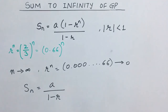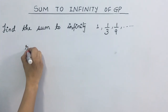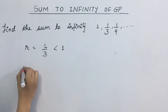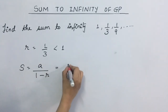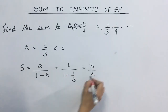So this is going to be the formula for sum to infinity of GP. One thing should be noted here: yeh jo sum to infinity wala case hai, this is valid only when the value of r is less than 1. Yadi yeh 1 se choti hai, tabhi yeh case apply hoga. Let us understand this: find the sum to infinity of the series 1, 1/3, 1/9, and so on. In this case, what is r here? It is 1 upon 3. Yeh value is less than 1. Toh phir S kya ho jaega: a upon 1 minus r, that is 1 upon 1 minus 1 by 3, this is going to be 2 by 3 at the bottom, yaani 3 upon 2. So this is going to be the sum to infinity of this particular series.